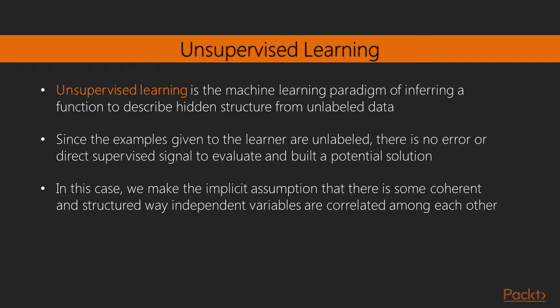Unsupervised learning instead is the machine learning paradigm of inferring a function to describe hidden structure from unlabeled data. Since the examples given to the learner are unlabeled, there is no error or direct supervised signal to evaluate and build a potential solution. In this case we make the implicit assumption that there is some coherent and structured way independent variables are correlated among each other.